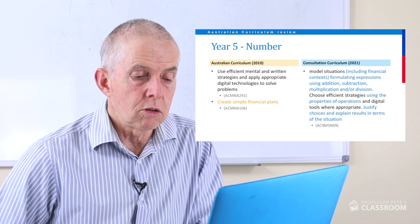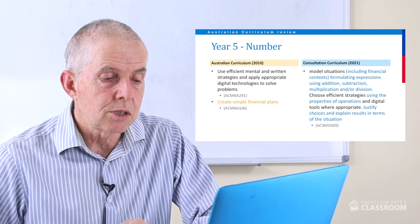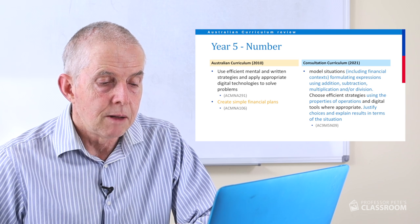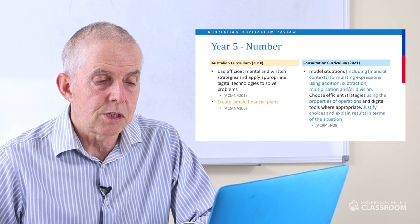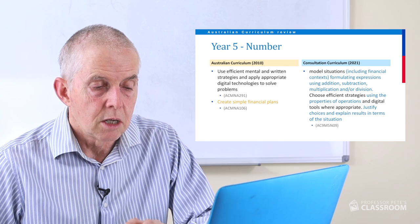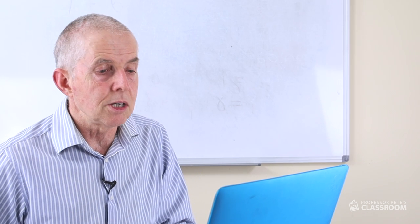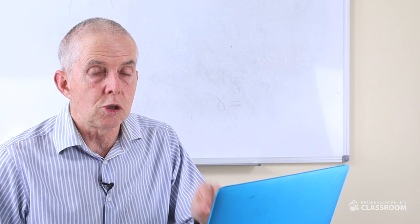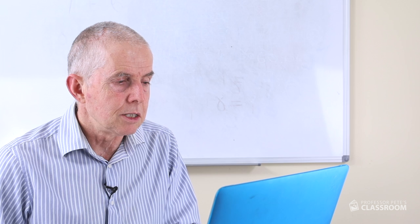Number nine: we have another long content descriptor. Model situations, including financial contexts, formulating expressions, using all the operations. Choose efficient strategies using the properties of operations and digital tools where appropriate. Justify choices and explain results in terms of the situation. So you're modelling, solving problems using all the operations, using appropriate strategies, taking into account properties of operations, and then explaining what you did and justifying your choices. This is very, very powerful — it implies that students will be asked to choose what they're going to do to solve a problem, which is a very powerful learning and teaching technique.